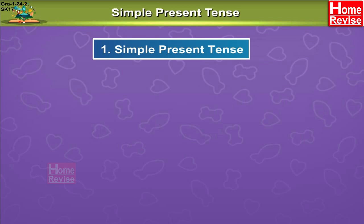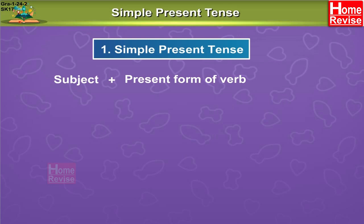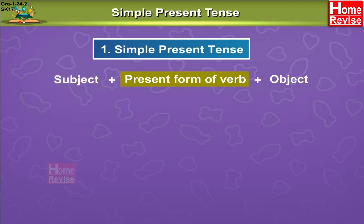Simple Present Tense. Let's understand the word order of Simple Present Tense. The sentence begins with the subject, which is followed by the present form of the verb, and then followed by an object. So your word order is: subject plus present form of the verb plus the object.